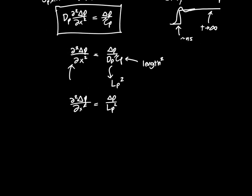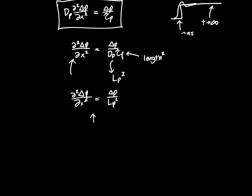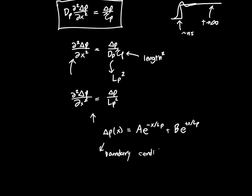From basic differential equations, the solution to this equation will look like delta P as a function of x equals A times e to the minus x over L_P, plus B times e to the positive x over L_P. The only thing we need to do to solve this is apply boundary conditions. Boundary conditions tell us the function's values at the edges of our system so we can find what it looks like in between — though a known value at any interior point would work just as well.